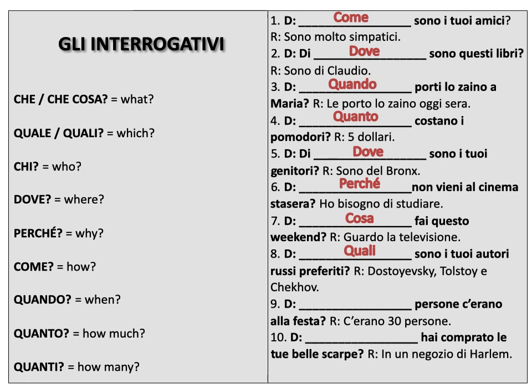Numero nove. Blank persone c'erano alla festa? — C'erano trenta persone. Remember c'è/ci sono, which means 'there is' — c'era or c'erano is simply the past form. So blank people were at the party, and there were thirty people. We're asking about a number, so it should be quanto, but here we change it to the plural feminine for persone — so it would be quante persone.